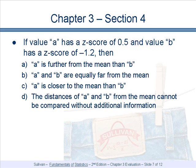If a value A has a z-score of 0.5 and a B has a z-score of negative 1.2, then if A is the further from the mean than B, A and B are equally far from the mean, A is closer to the mean than B, or the distance of A and B from the mean cannot be compared without additional information.